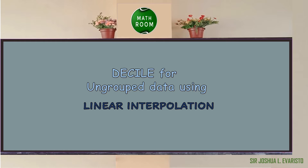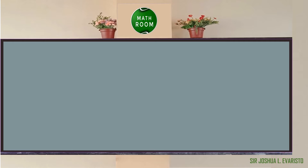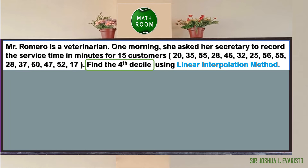Now let us discuss how to solve the decile for ungrouped data using linear interpolation. Mr. Romero is a veterinarian. One morning, she asked her secretary to record the service time in minutes for 15 customers: 20, 35, 55, 28, 46, 32, 25, 56, 55, 28, 37, 60, 47, 52, and 17. Find the fourth decile using the linear interpolation method.